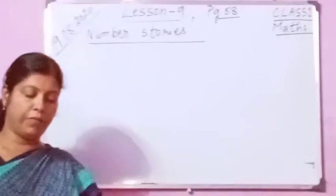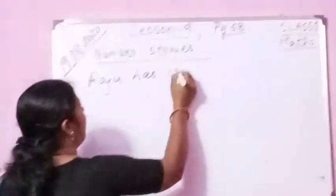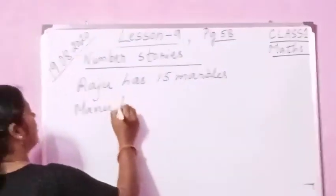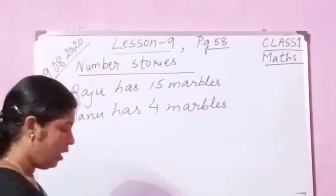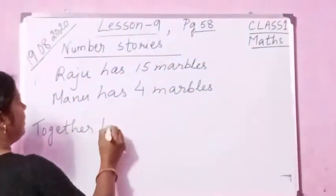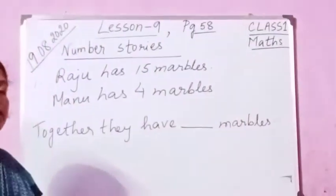Number 1. Raju has 15 marbles. Manu has 4 marbles. Together they have dash marbles. Now, you have to understand by reading the sum whether it will be plus or minus — whether you have to add or subtract.